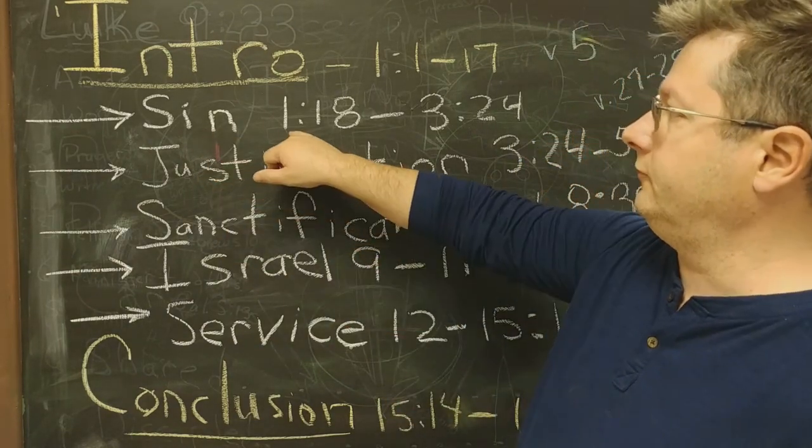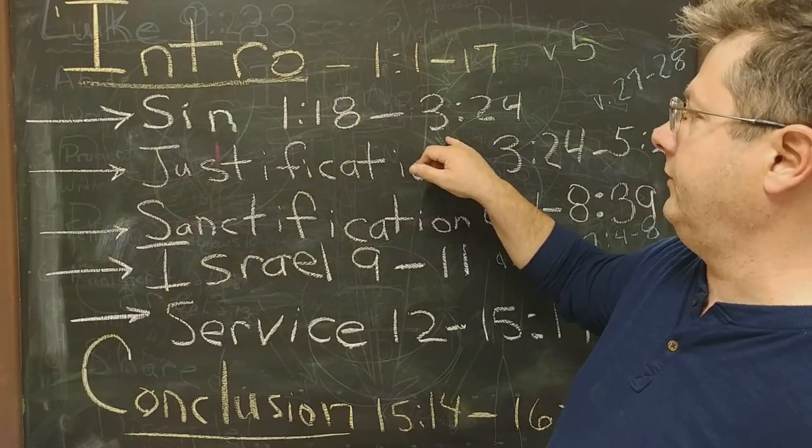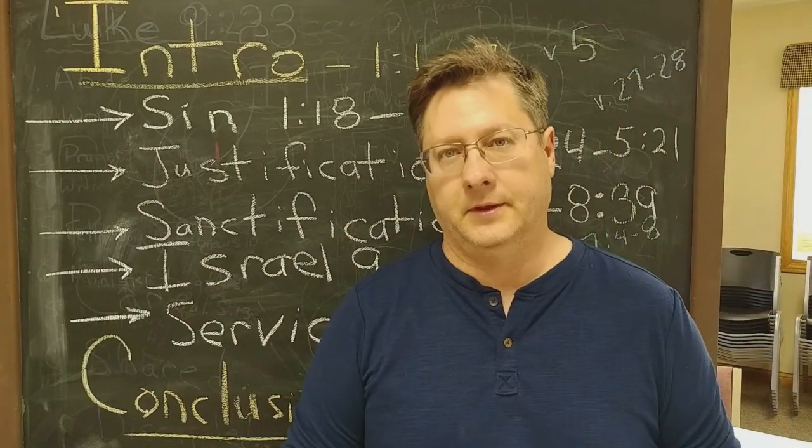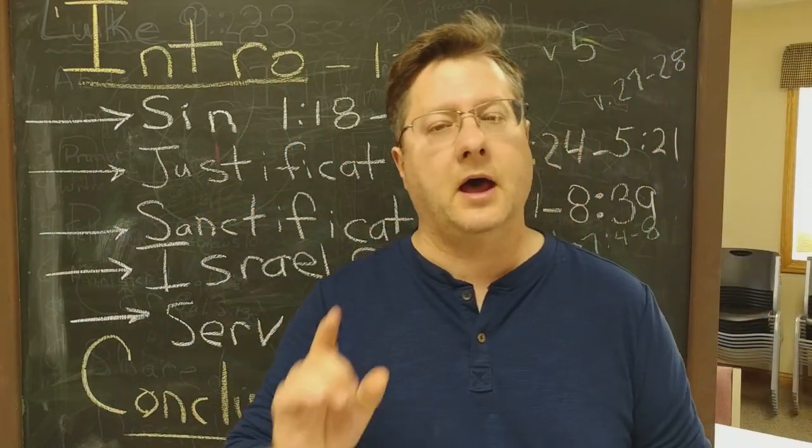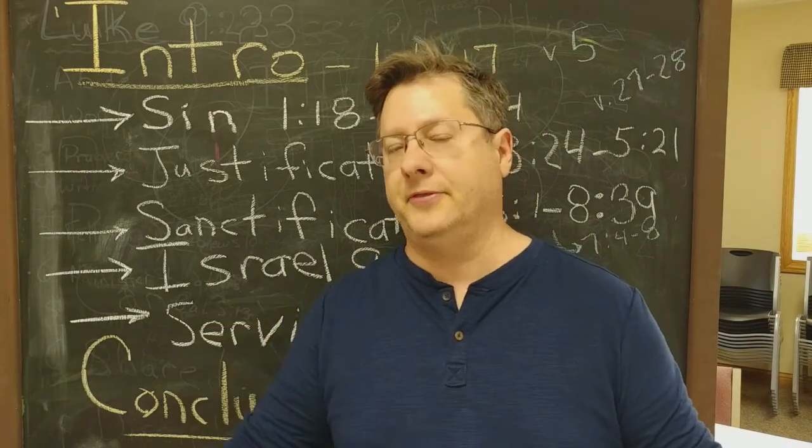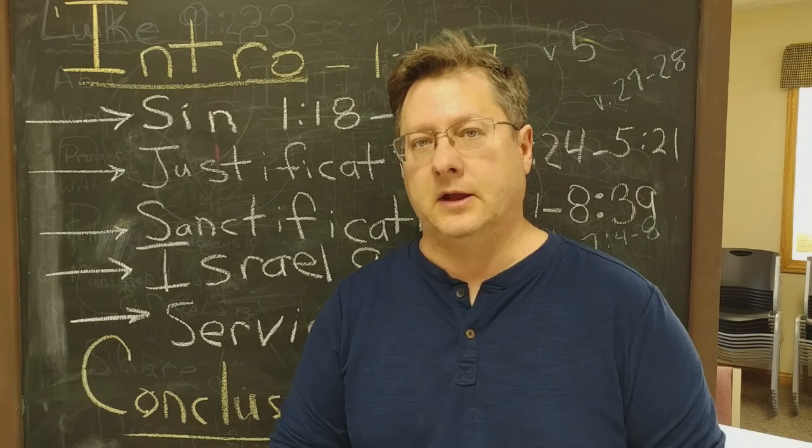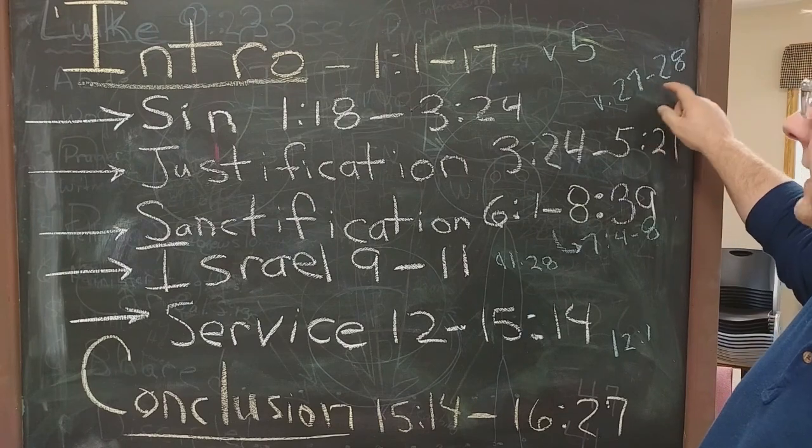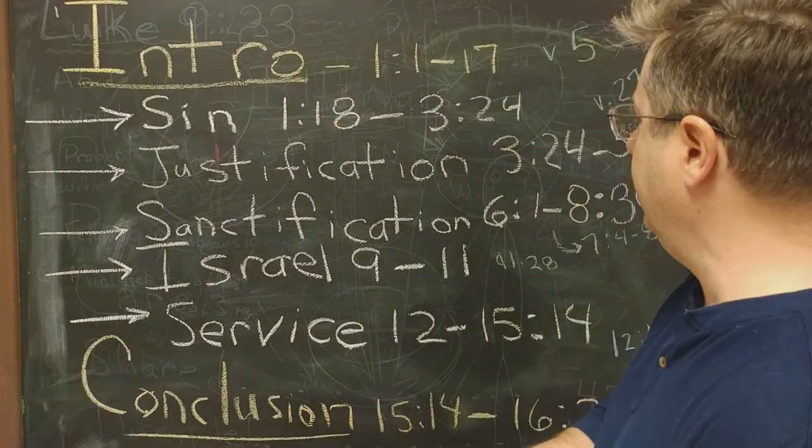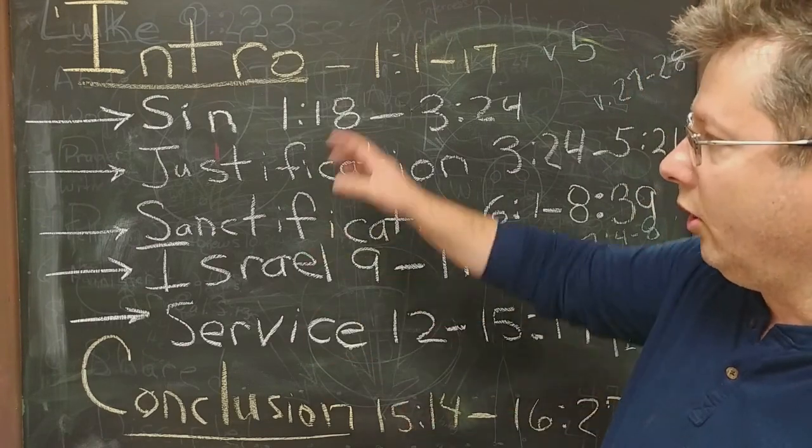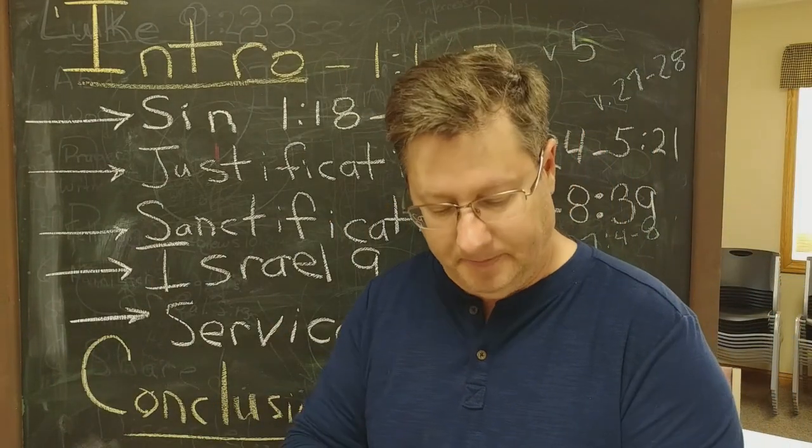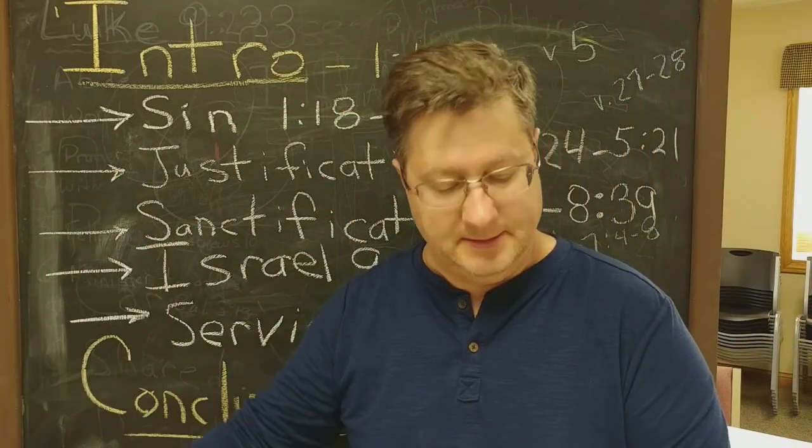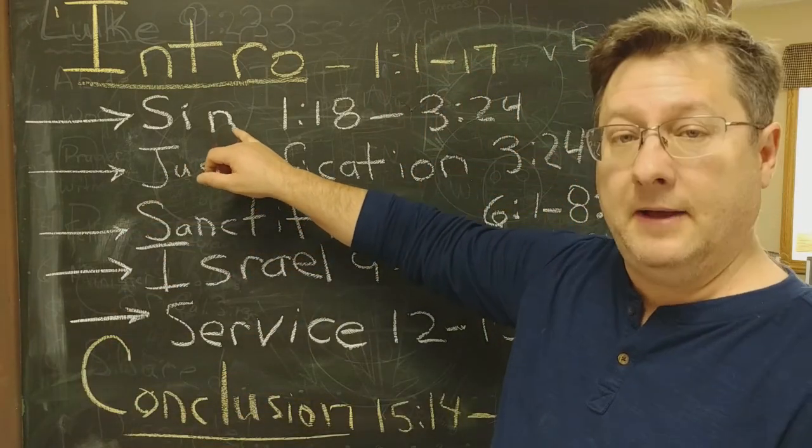He begins the first point: chapter 1 verse 18 goes all the way to chapter 3 verse 24. He talks about sin. Those chapters he nails sin. Not only does he talk about sin he talks about the wrath of God against sinners, that God will judge sin. The first point is people have to understand that they're sinners.